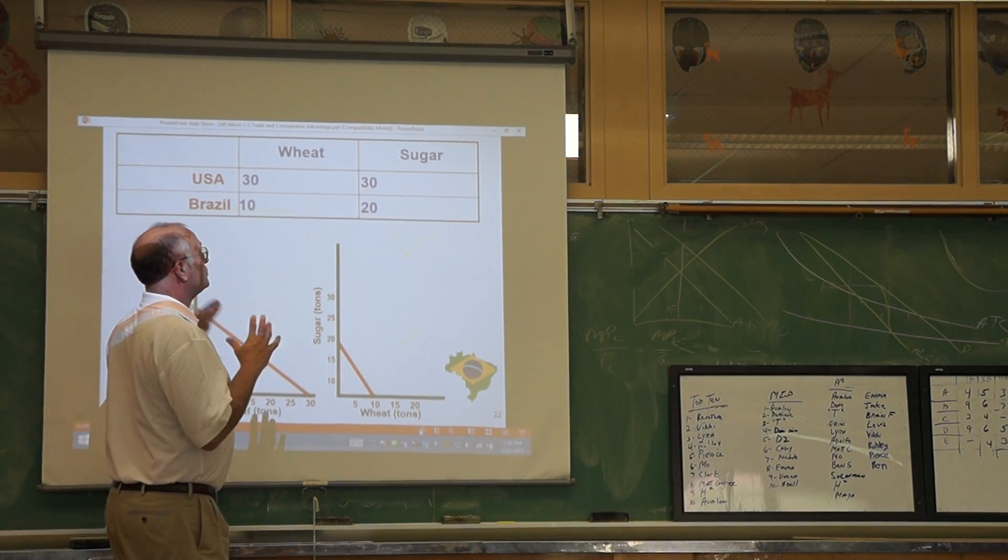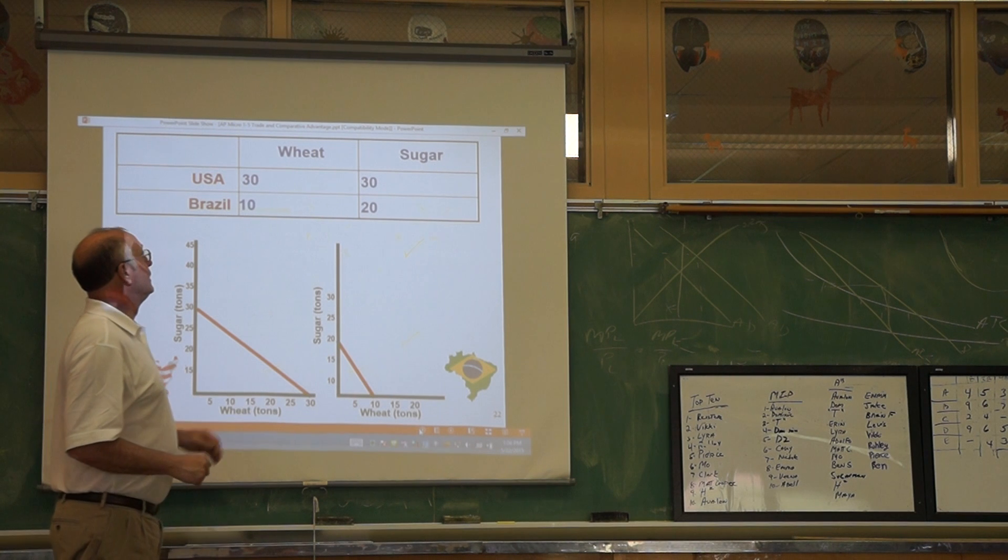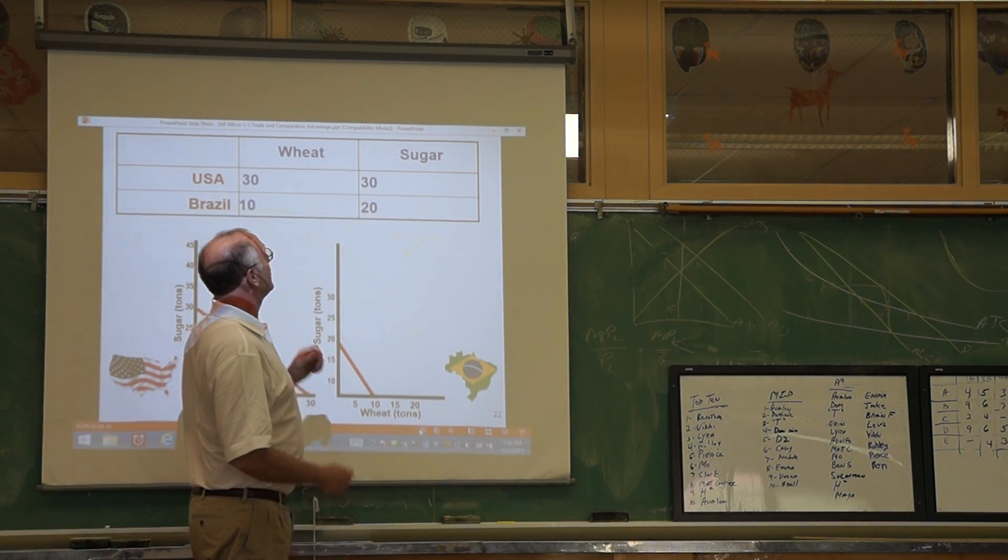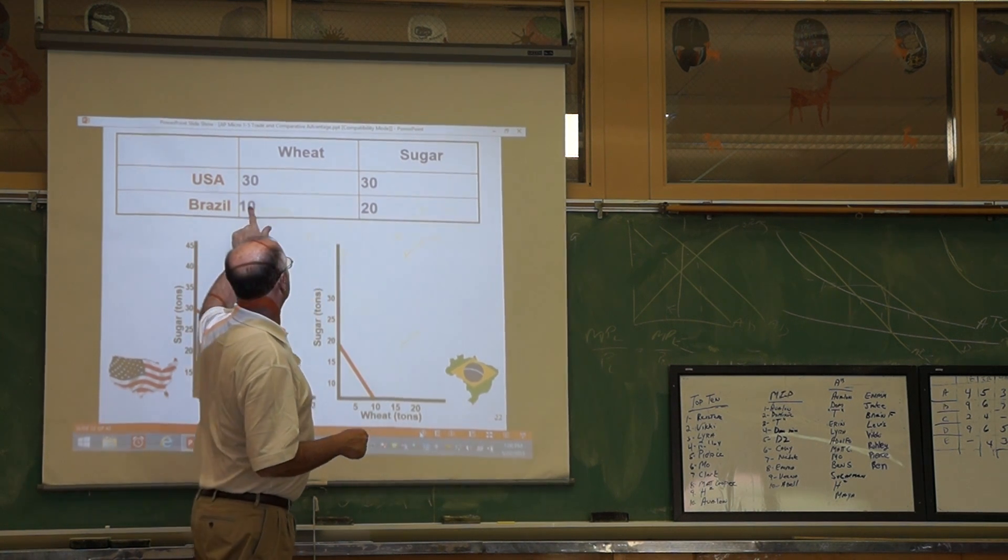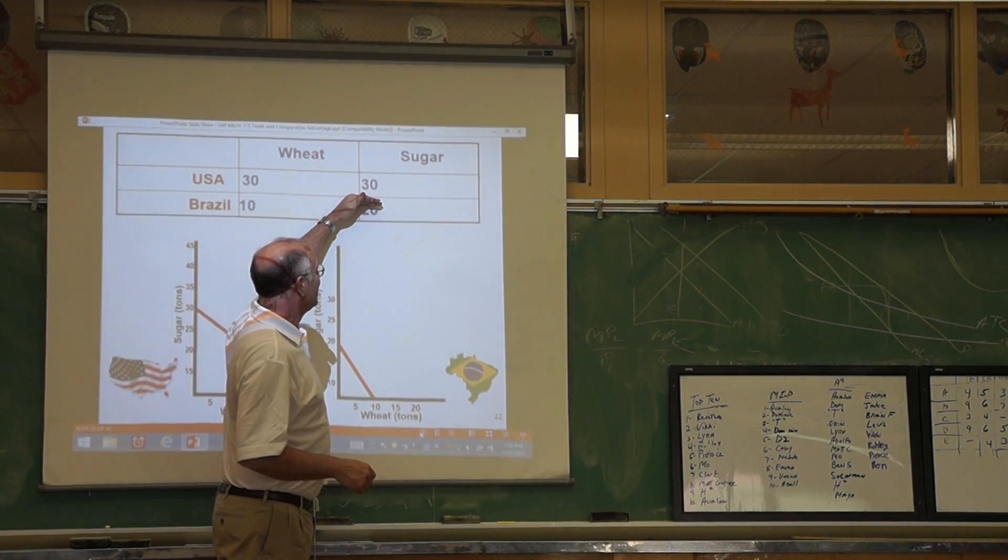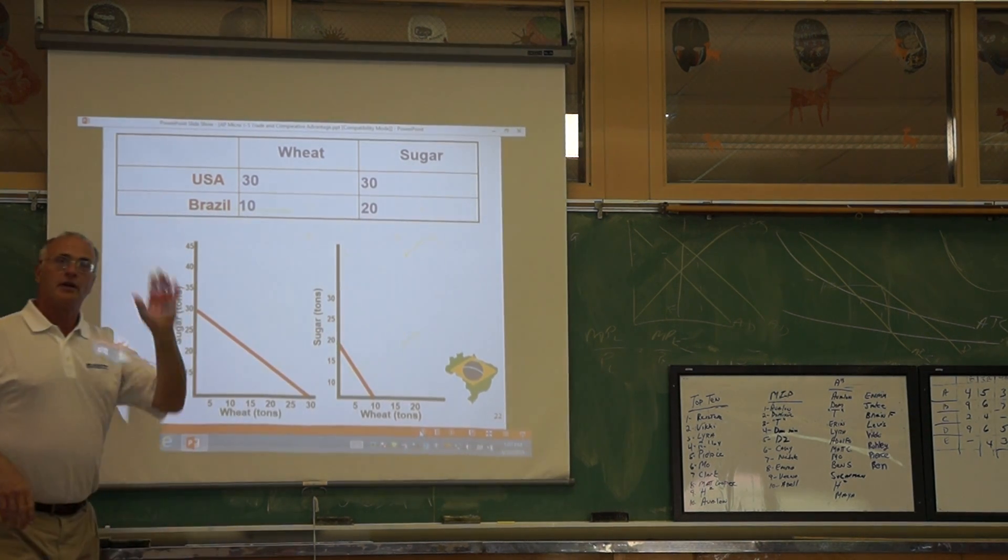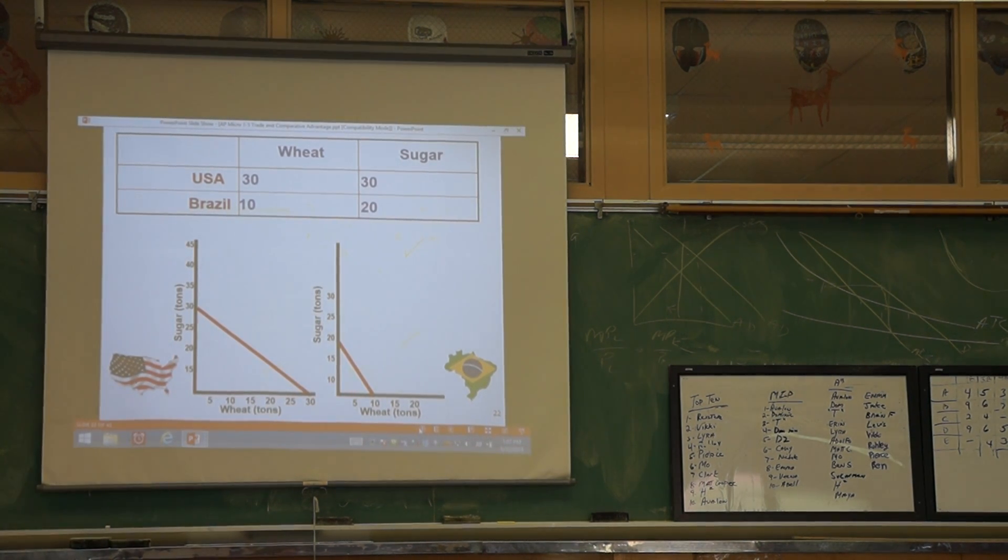If we're figuring out sugar, for the United States you do the other (wheat): 30 over 30 is 1. For Brazil sugar, you take the wheat: 10 over 20 is a half. A half is smaller, so Brazil specializes in sugar.